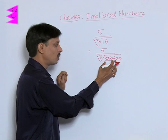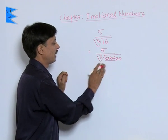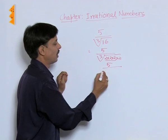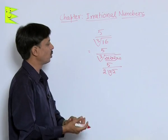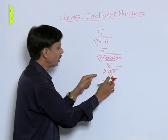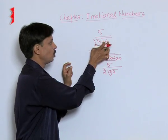One of the pair of three same prime numbers will come out. This can be written as 5 upon 2 into cube root of 2. That is 2 into cube root of 2 is the simplest form of this cube root of 16.